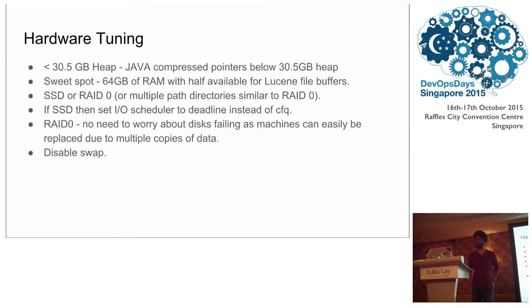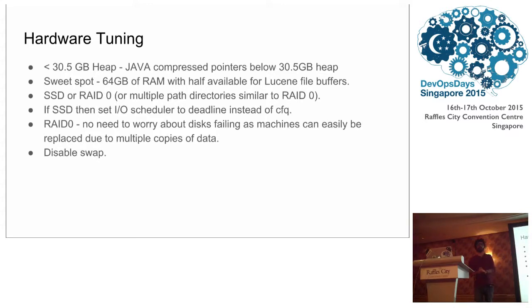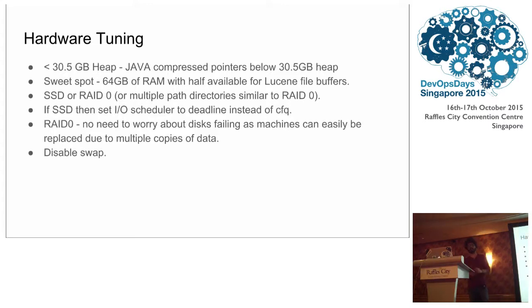Some tips for tuning your Elasticsearch cluster. Java compresses your pointers if the heap size is below 30.5 GB — this is a magic number; Google 'Java compressed OOPs' for the reason. Elasticsearch uses Apache Lucene at the backend, and Lucene makes really good use of Linux file cache buffers. The advisable amount is: allocate half your machine's RAM to the Java JVM heap, and the other half is used by Lucene for file buffers — enabling much faster searching. You can go up to 128 GB RAM, but beyond that it becomes cost-ineffective. You should not exceed 30.5 GB of heap because then your GC pauses will be too long and Java will effectively consume much more memory.